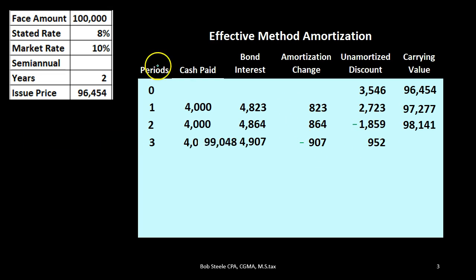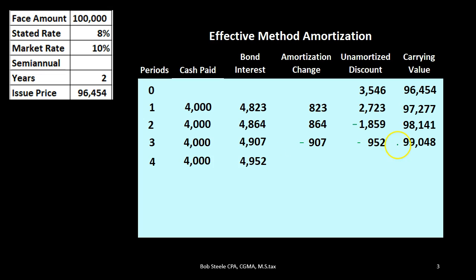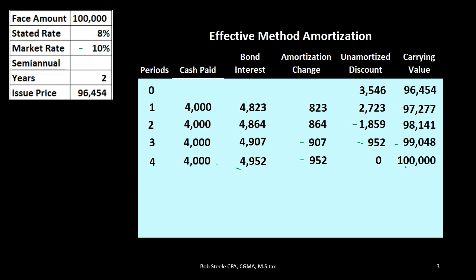The carrying amount is always $100,000 minus the unamortized discount, giving us $99,048. One more time for period four: $4,000 for cash, same calculation. Bond interest is that number times the 10% market rate divided by 2. We subtract and get to $0 for the unamortized discount — taking the $952 down to $0 — which is what we want. We're left with just the $100,000 face amount that we'll then pay off at the end of the bond.